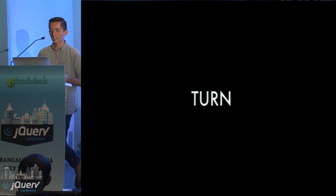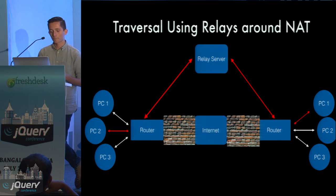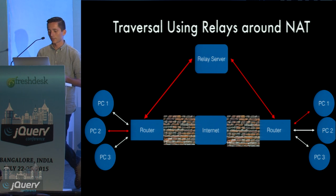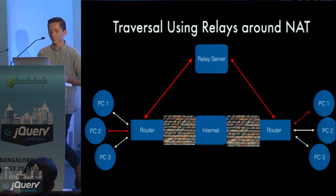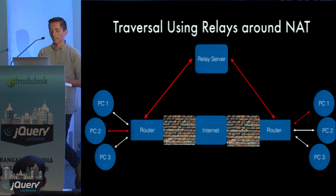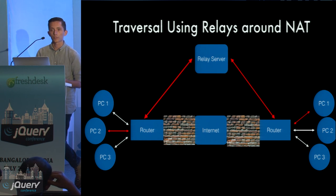For the other 10% — typically people on corporate networks — we have to use TURN. In those cases where STUN failed and we can't traverse the NAT, there's no way to set up a direct connection, so we use a TURN server, which acts as a relay. All the calling data goes through this TURN server. It costs a lot of money to run, a lot of bandwidth, and it's a huge pain to scale. So you won't find any public TURN servers — you basically have to set up your own, manage it, and scale it based on the number of calls you're routing.